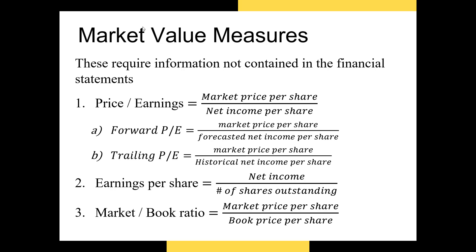Next, we have market value measures, which provide an indication of how valuable the firm currently is relative to some metric on its financial statements. The three most common are typically the PE ratio, earnings per share, and the market-to-book ratio. The PE ratio is probably the most well-known.